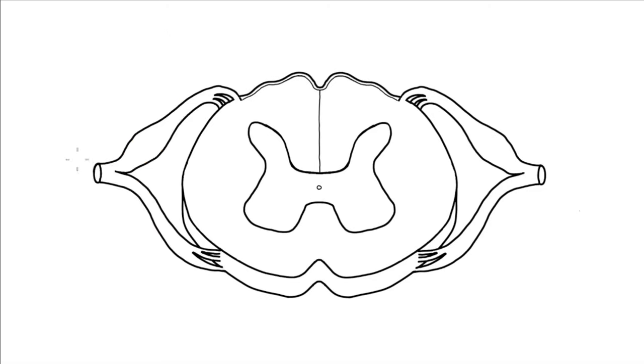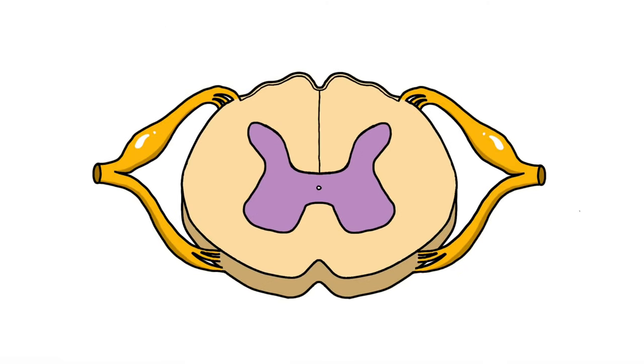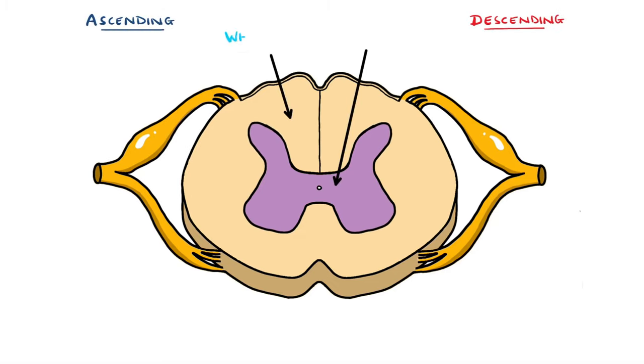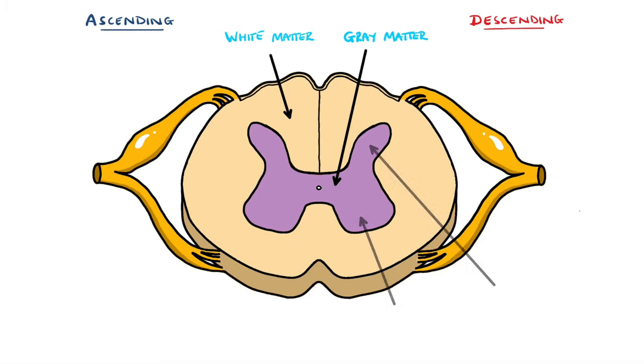Within the spinal cord, there are several different tracts. Grossly, they are divided into ascending and descending tracts. On the cross-section of the spinal cord, these tracts make up the white matter, named because of the whitish color that the myelin around the axon gives. The grey matter is located centrally, comprising the ventral and dorsal horns.